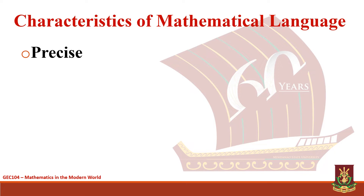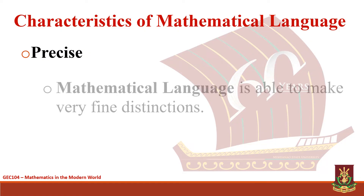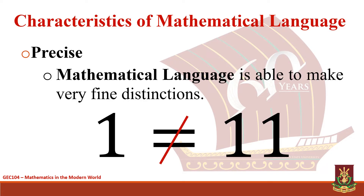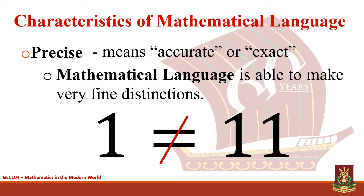As a language, mathematics has a number of characteristics. The first characteristic is being precise. This means that mathematical language is able to make very fine distinctions. Hence, a little manipulation of symbols may mean a different thing. For instance, putting a dash symbol in the equality sign in 1 equals 1 means something entirely different. Precision, which also means being accurate or exact, is the reason why mathematics is considered to be an exact science.